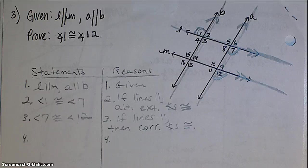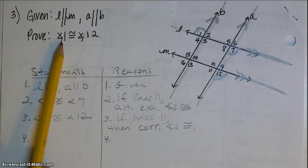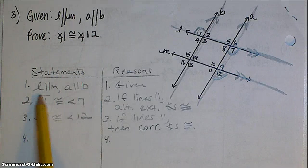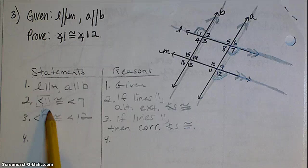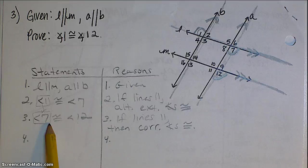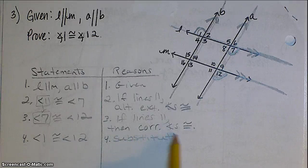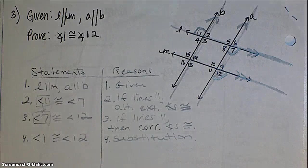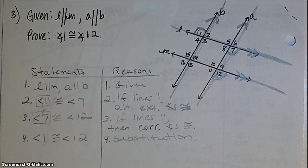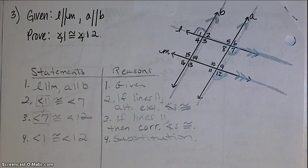Okay. I'm really close. I have 7 as congruent to 12, but I want 1 as congruent to 12. So notice the same idea as the last one. I'm just going to take that angle 1, because it's the same as 7, and substitute it in right here. And that's how you use parallel lines to prove that angles are congruent or supplementary.